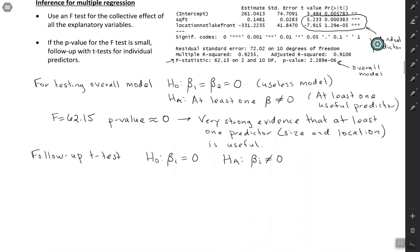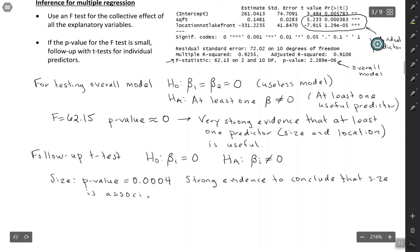So let's look at size first. The size one, we end up with a very small p-value. Our p-value here is 0.0004, rounding a little bit. So we have strong evidence to conclude that size is associated with price. So far, this looks like the kind of conclusion we would have drawn for simple regression. But this isn't simple regression. This is multiple regression. So we have to remember to say, after adjusting for location.